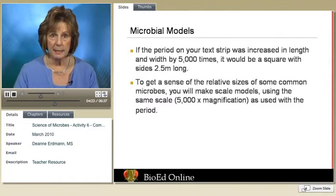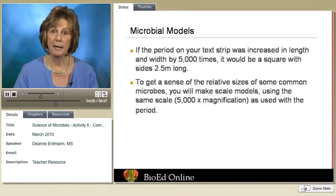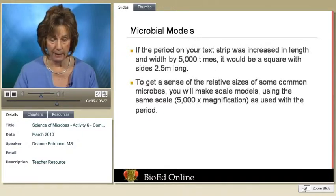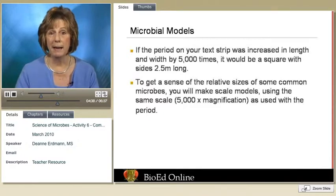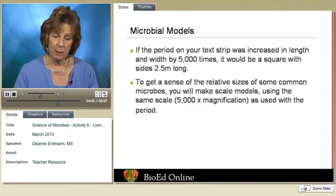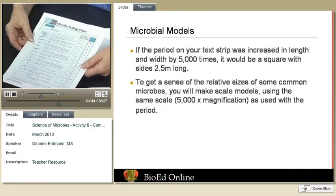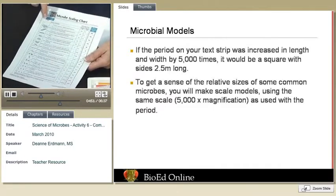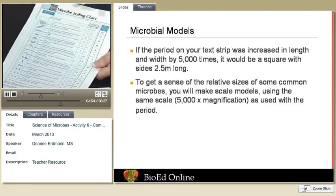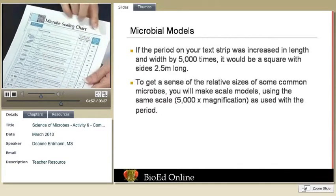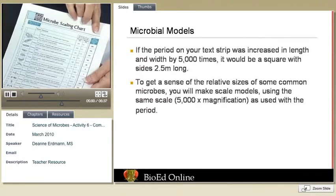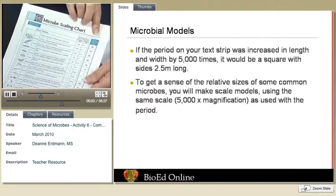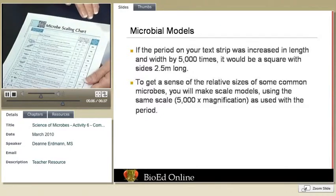If we take this little period and increase it 5,000 times, it makes a square 2.5 meters long and 2.5 meters in height, and we want to cut that out of a big piece of banner paper. The next thing we're going to do is take the microscope scaling chart. On the chart you'll see a general representation of each microbe, the group it's in, a little description, and the actual size. That size has been converted to the scale of our enlarged Helvetica period — enlarged 5,000 times — making it easier for students to make a model.